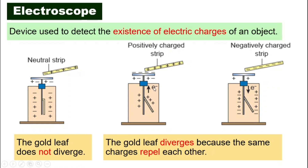How about if we bring a negatively charged object near the electroscope? It works the other way around — electrons from the object move downwards towards the gold leaf, and both leaves become negatively charged. Because they carry the same charge, they push each other and diverge. So whether the object is positive or negative, the gold leaf will diverge.